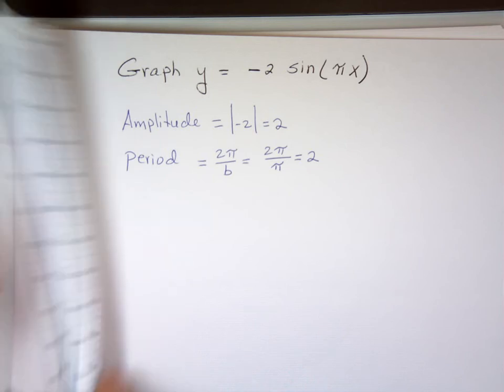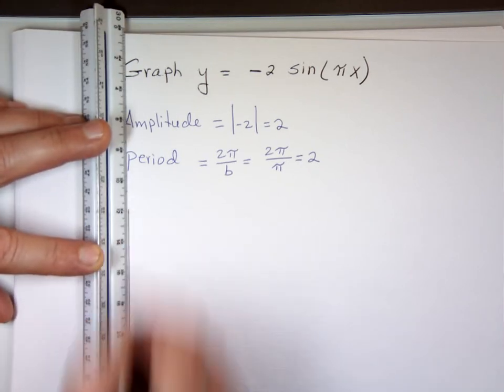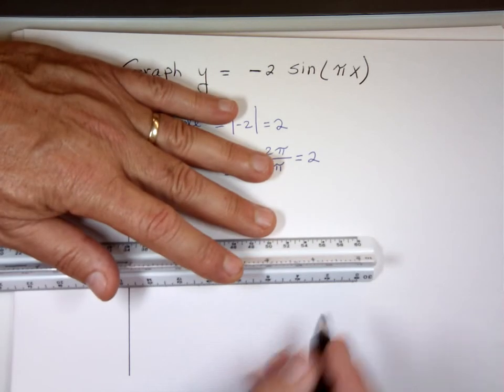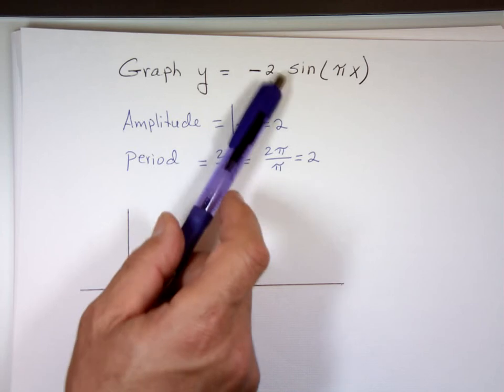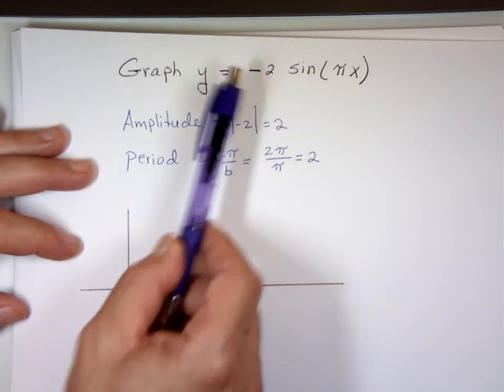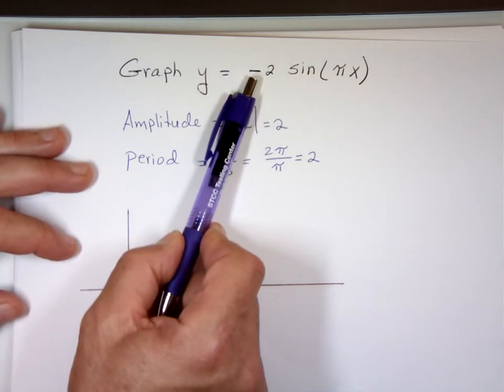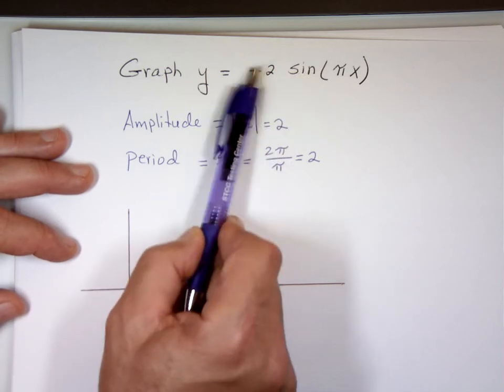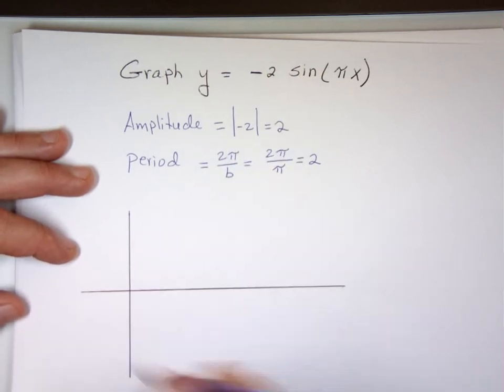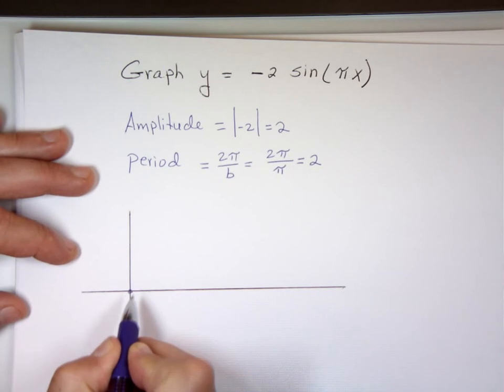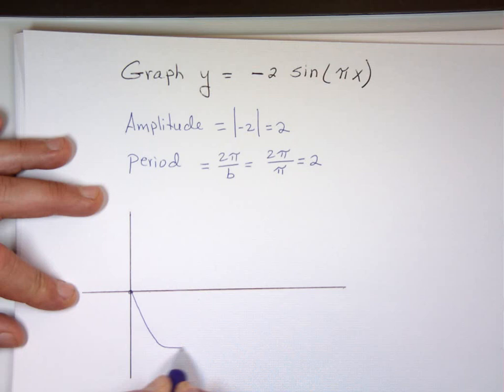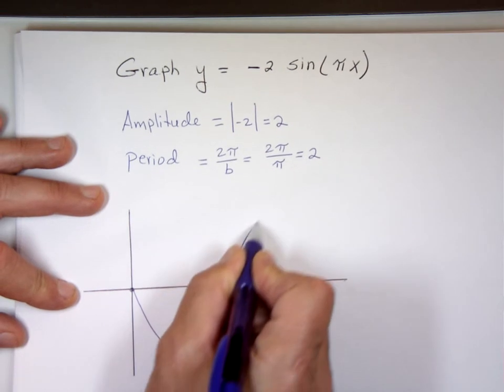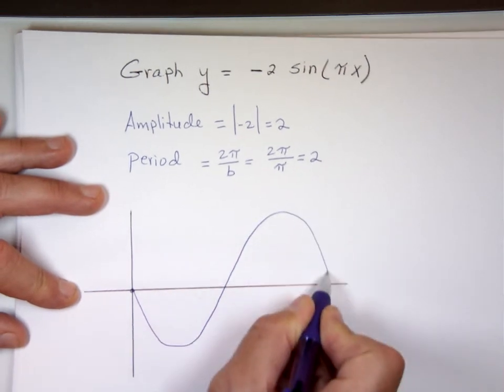So now the graph. It's a sine function. But be careful, we have a minus sine. What is the minus sine going to do? It's going to flip it, right? So it's going to look like this. Instead of going like that, it's going to be upside down. It's going to look like that.